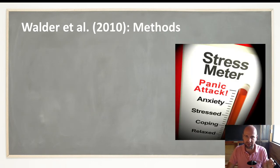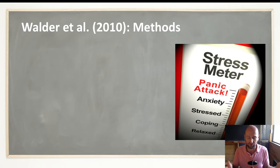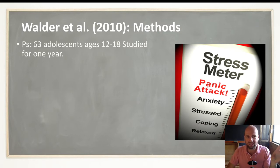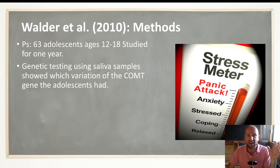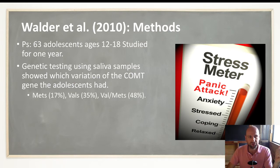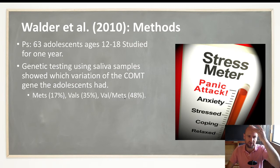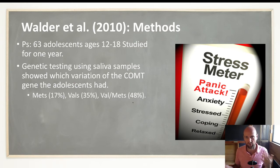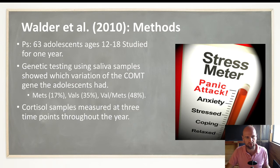The first study we're going to look at basically shows there is a connection between the genotype and high levels of stress. This is Walder et al.'s 2010 study. They used 63 adolescents aged 12 to 18, followed over a whole year. They used genetic testing to figure out which variant of the COMT gene each participant had, and gathered saliva samples to measure stress levels. They found 17% were Met/Met, 35% were Val/Val, and 48% were Val/Met. In a general population roughly half of us are Val/Mets, about 25% Val/Val, and 25% Met/Met.